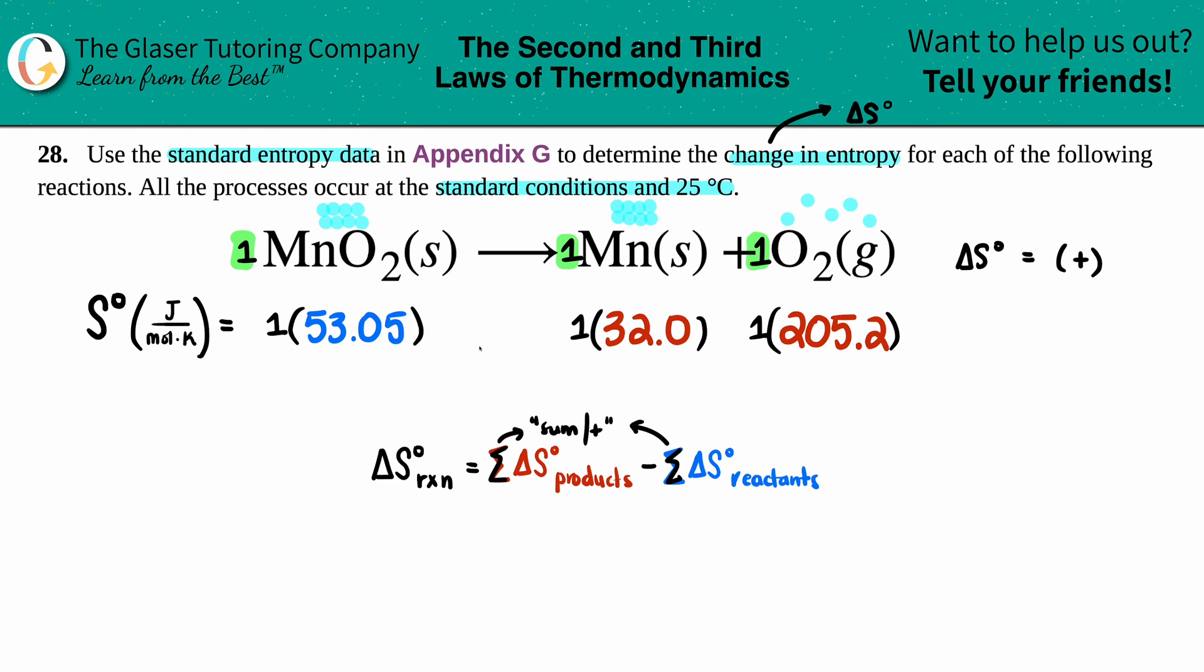And then you sum up the side that has multiple substances. So it's literally Mn plus O2, so it has to be this number plus this number. The total on the left side, the reacting side, isn't going to change because you only have just one of them, so 53.05. But now let's just see what the product side is: 32 plus 205.2, I get 237.2.